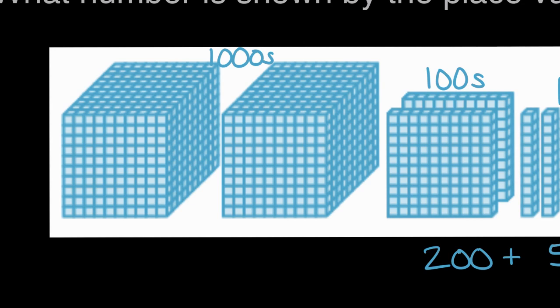And how many thousands are there? There are one, two. So two thousand. Two thousands.